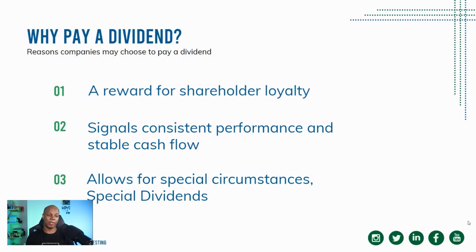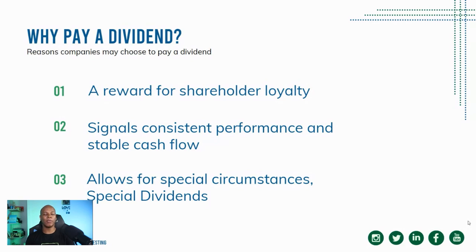Why do companies pay dividends? I've identified three reasons — let me know in the comments if you can think of any more. The first reason is they want to reward shareholders for their loyalty. It's very important for some companies — especially blue chip companies that may not see the same aggressive growth as smaller cap or growth stocks — to maintain a reputation of paying dividends, so investors can feel that even without strong capital gains, they have a payout of dividends to expect each year. The second reason is that it signals consistent performance and stable cash flow. Receiving consistent quarterly or bi-annual dividends over three, five, or ten years is usually a sign the company is generating enough profits to pay them out.